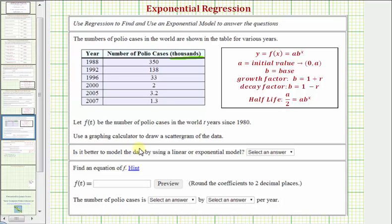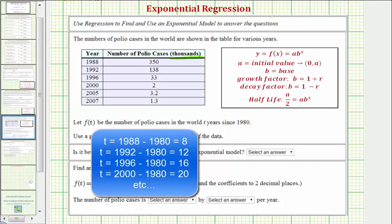Our first task is to use a graphing calculator to graph a scattergram or scatterplot of the data. Before we do this though, notice how t, the input variable, is the number of years since 1980, which means for the year 1988 we'd use t equals 8, so these would be the t values.